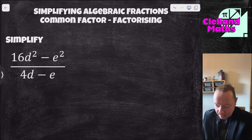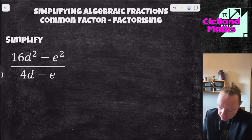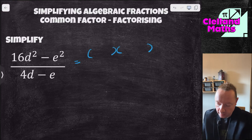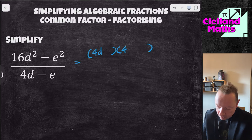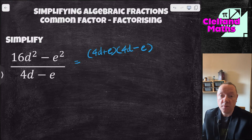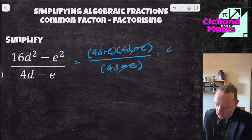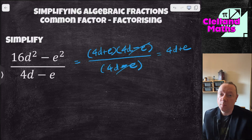Now simplifying using a common factor when nothing looks the same top and bottom — we need to factorise. The top, 16d² minus e², is a difference of two squares: no common factor, so double brackets. Square root of 16d² is 4d, square root of e² is e, giving (4d+e)(4d-e). The bottom is just (4d-e) on its own. The (4d-e)s cancel, leaving 4d plus e on top with 1 on the bottom, so just 4d plus e.